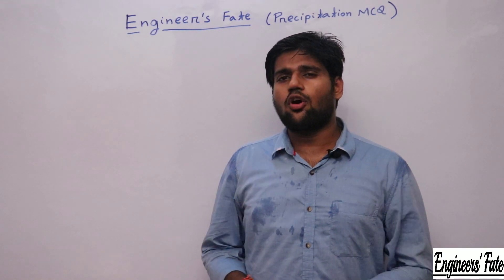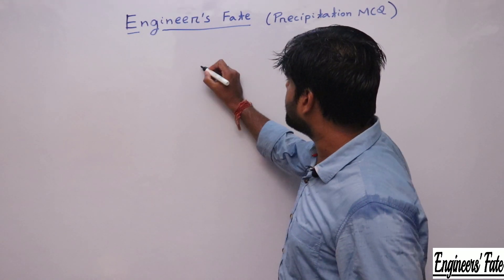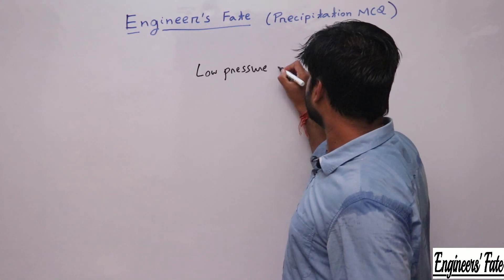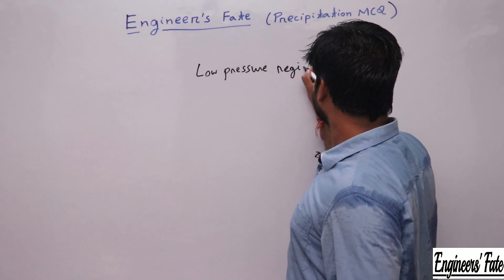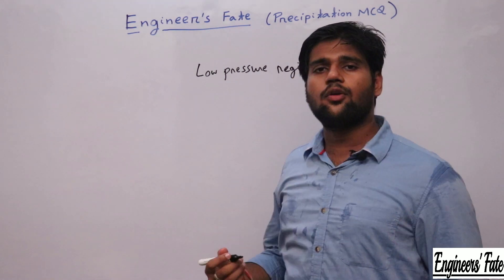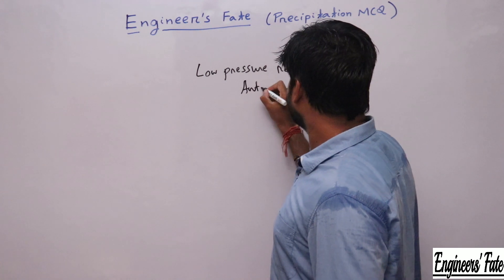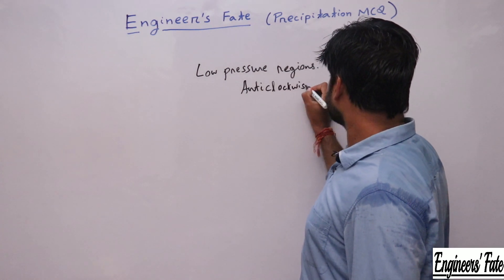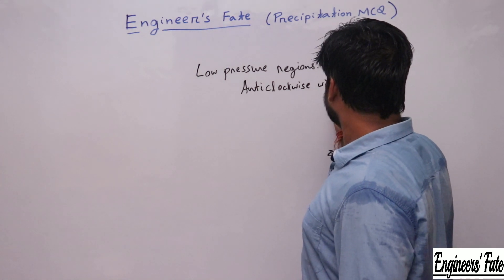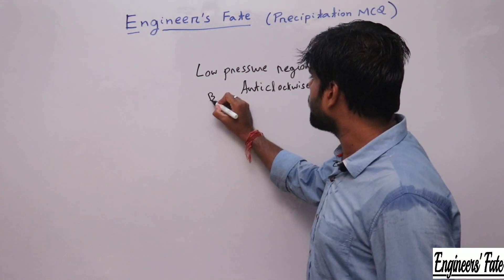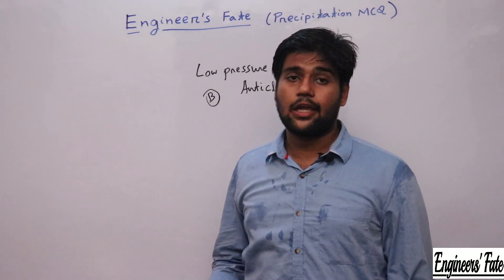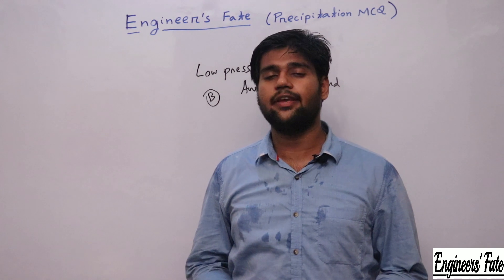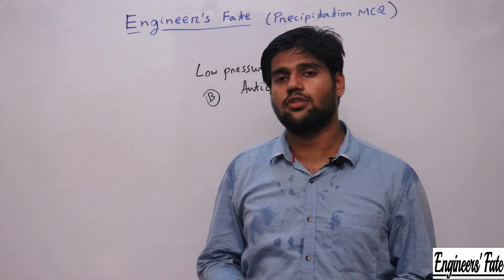The cyclone normally occurs in low pressure regions and the wind will be anticlockwise. So the correct option will be B. If he would have asked about anticyclone, then the option will be C. Try the next question.